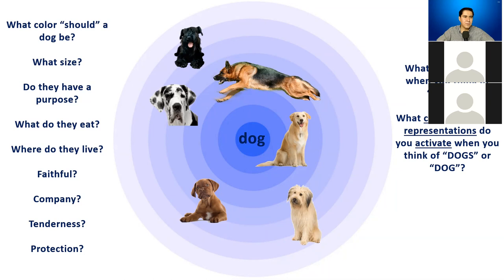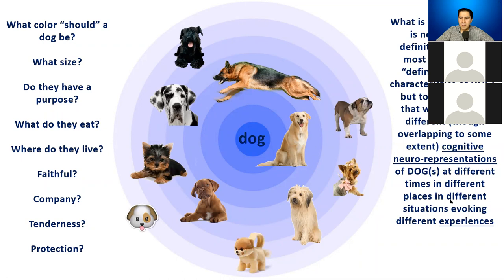What is most important is not making a definitive list of the most relevant traits of dogs, but to bear in mind that we all activate different — though overlapping — cognitive neural representations of dogs at different times, in different places, in different situations, evoking different experiences. If you closed your eyes and thought about 'dog,' something specific would come to your mind.